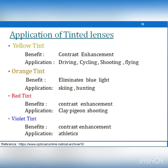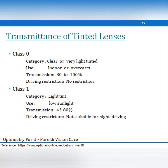Yellow tint is useful for color enhancement and is suited for driving, cycling, tennis, and shooting. Orange tint eliminates blue light and improves tracking ability, useful for shooting, skiing, and hunting. Red tint enhances color and improves skills like fishing and shooting. Violet tint also helps with color enhancement for athletes, improving contrast, depth perception, and tracking objects.